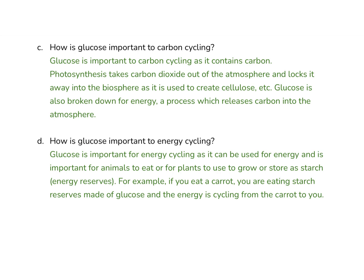How is glucose important to energy cycling? Glucose is important for energy cycling as it can be used for energy. It's important for animals to eat or for plants to use to grow or store as starch, which is that energy reserve. So if you eat a carrot, you are actually eating the starch reserves, which are made up of long chains of glucose. The energy is being transferred from that carrot into you. A lot of the energy that was initially in the carrot gets lost as heat.